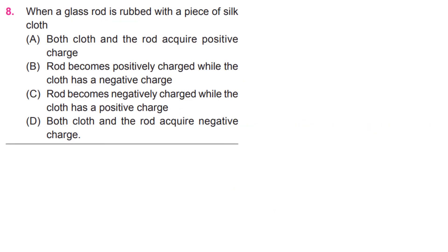When a glass rod is rubbed with a piece of silk cloth: B, rod becomes positively charged while the cloth has a negative charge.